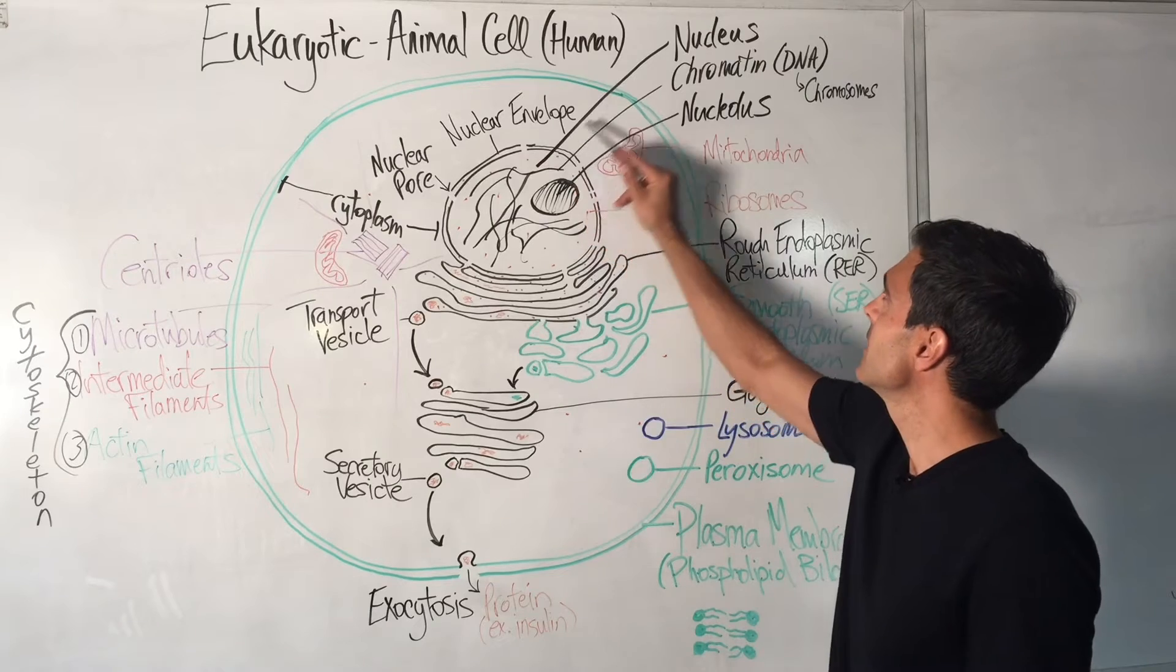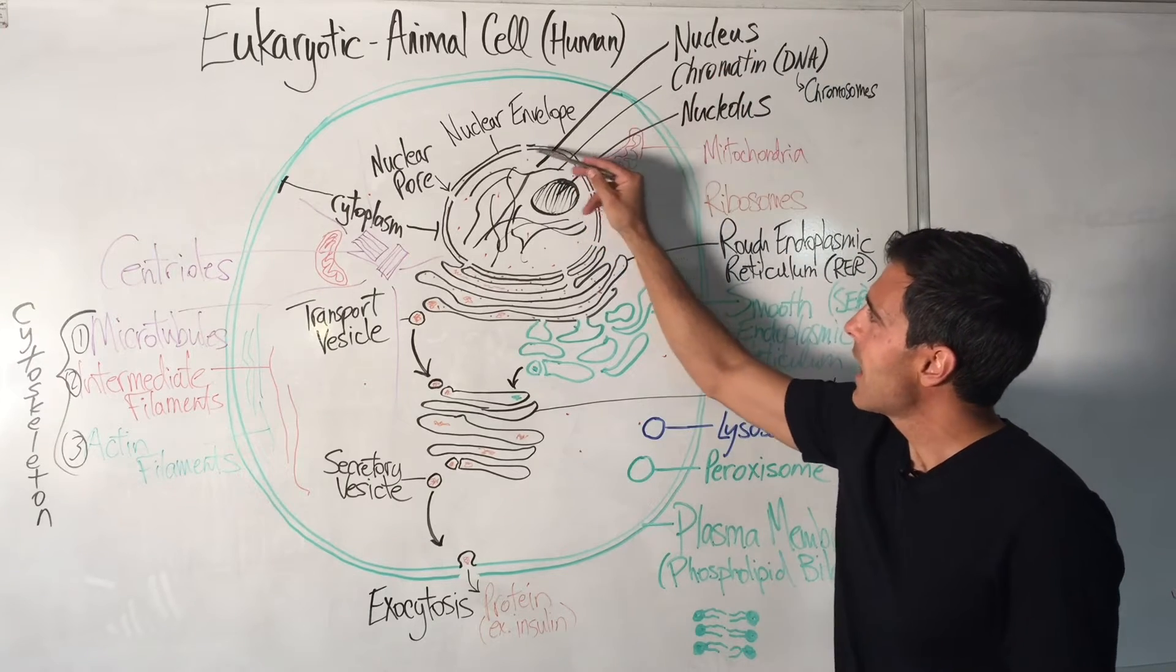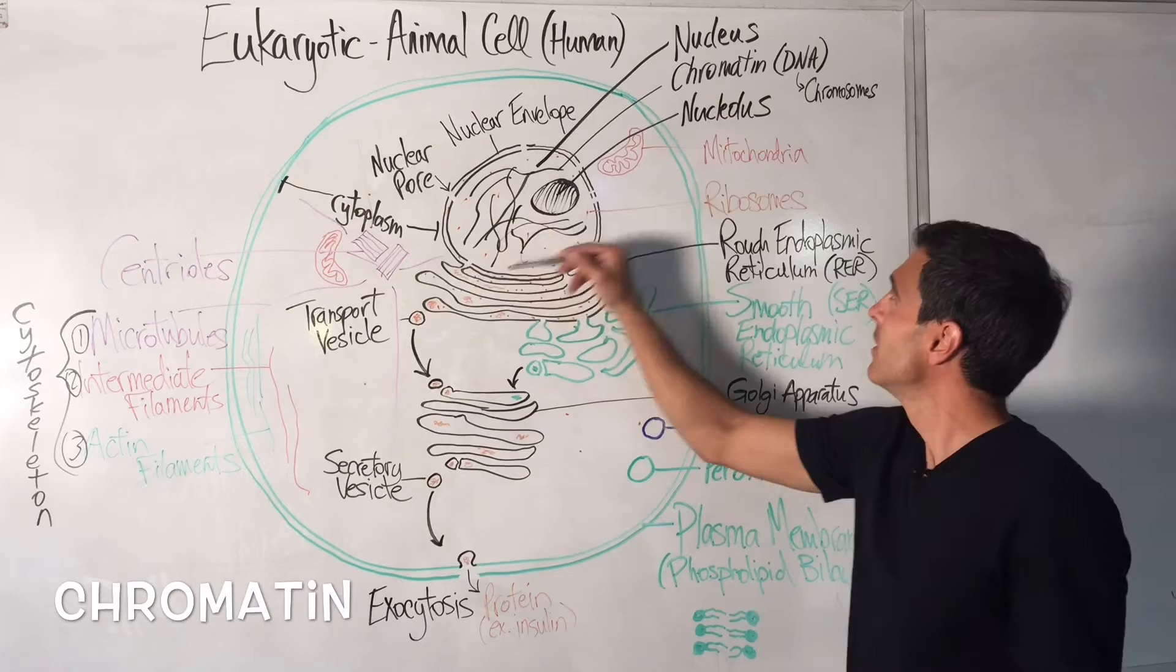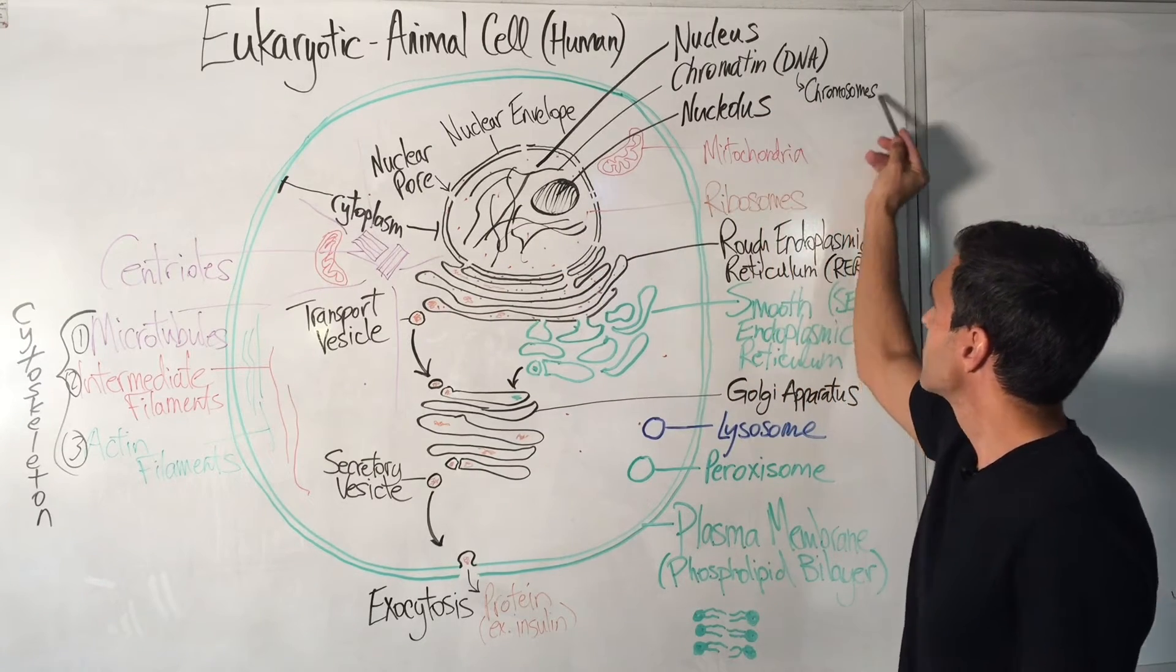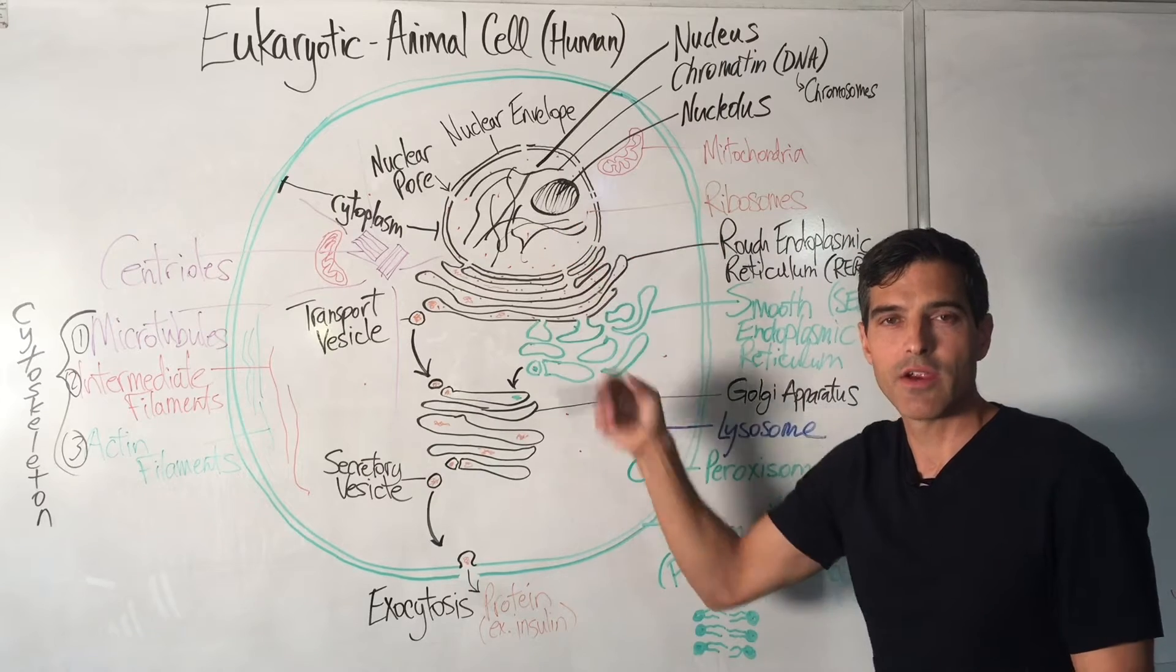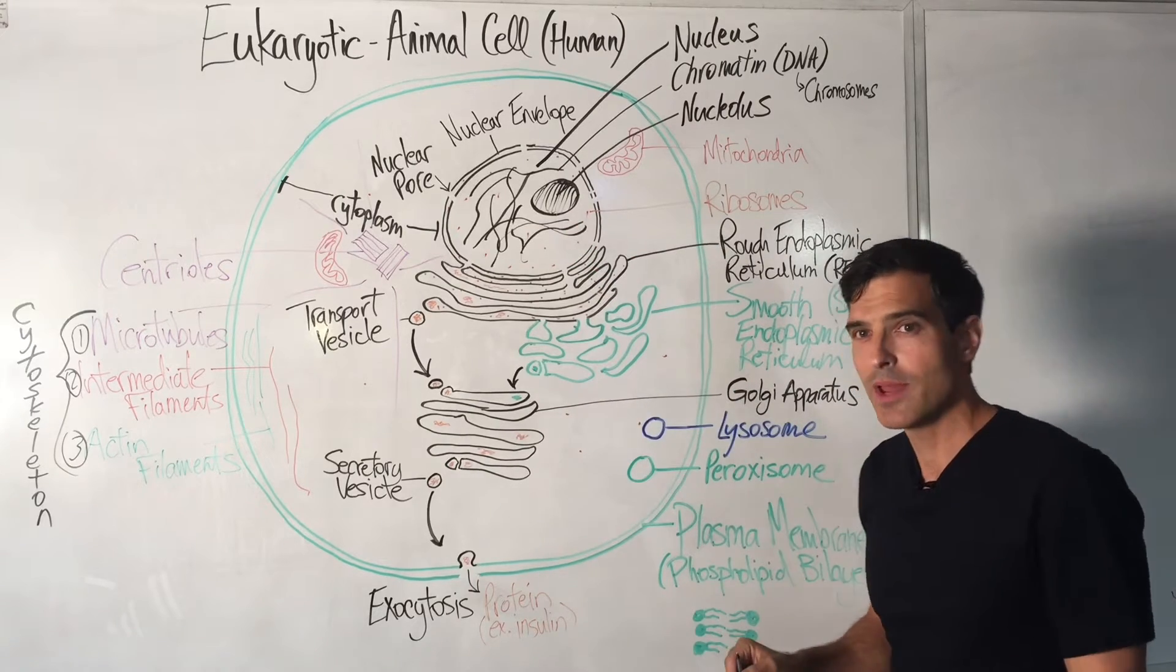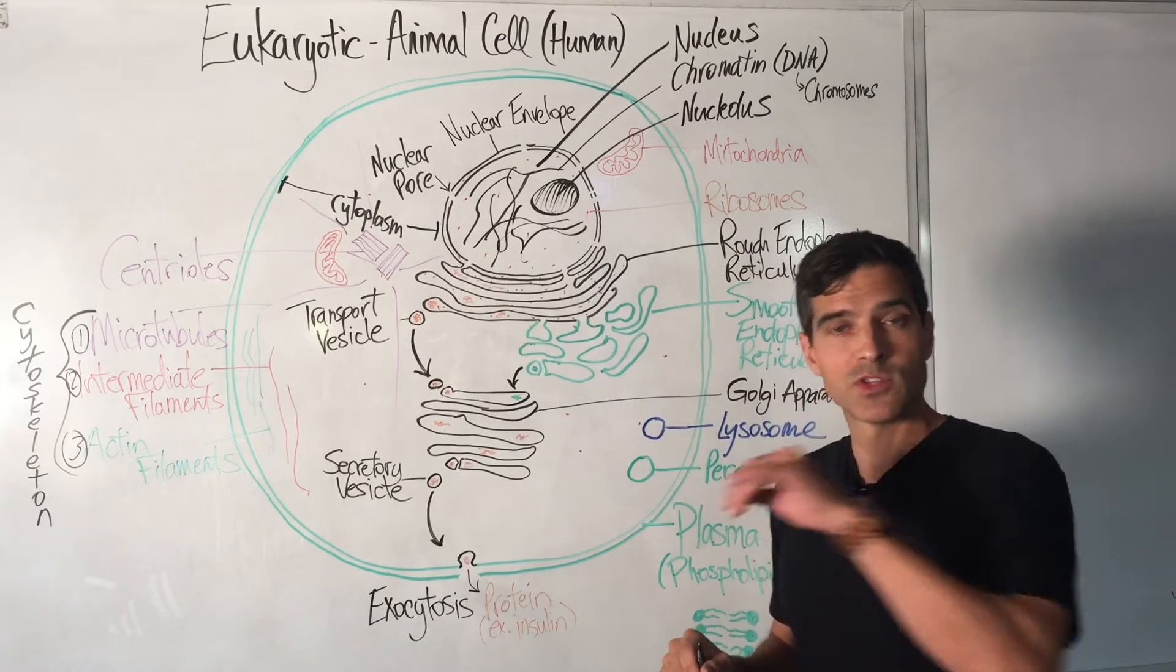Now you see here, the nucleus has inside the chromatin, which is the DNA. And chromosomes are actually in there. In a human, there would be 23 pairs, 23 from mom, 23 from dad.